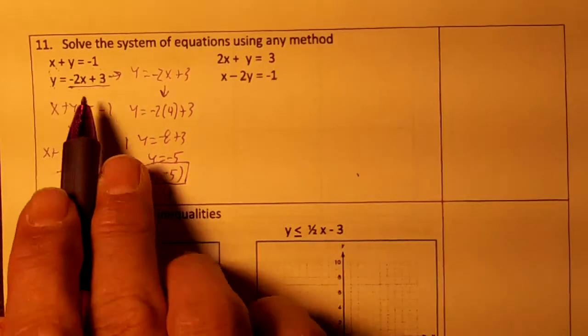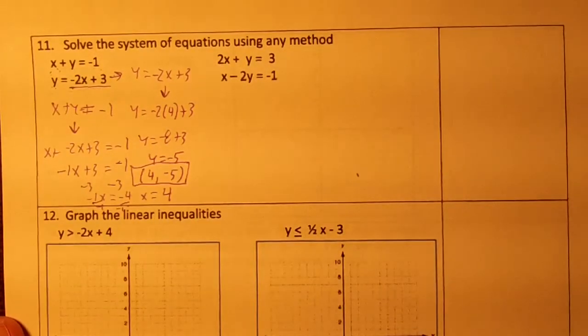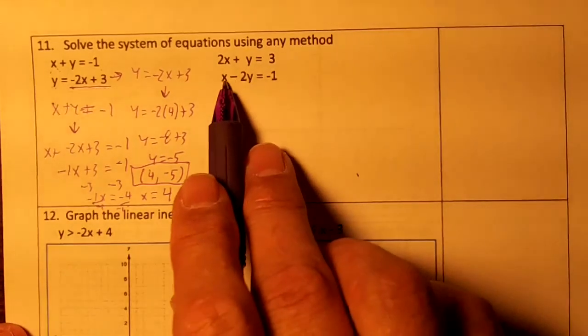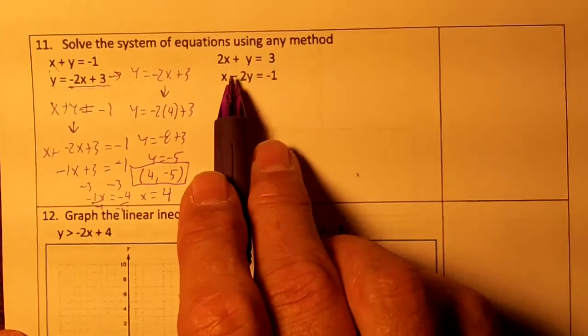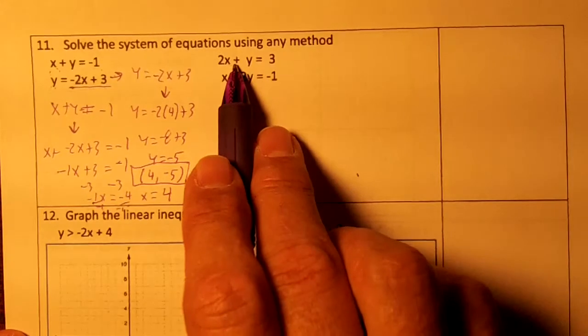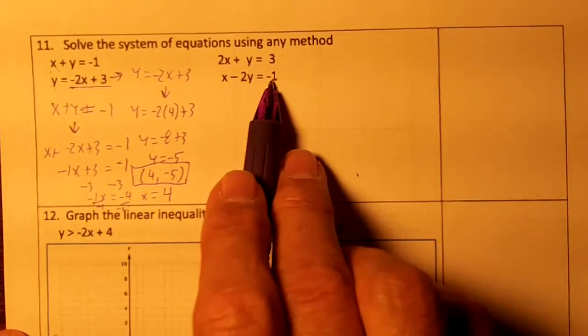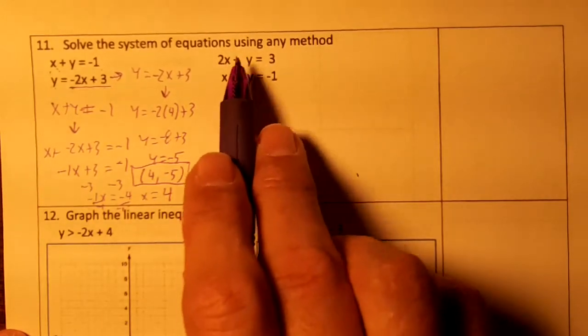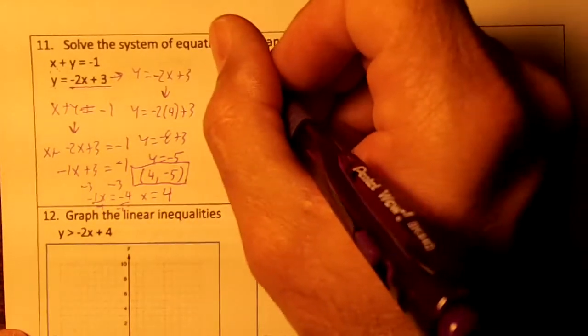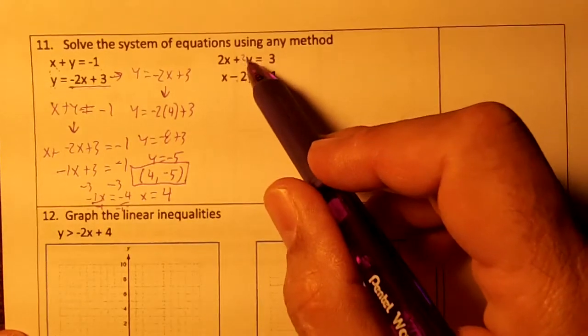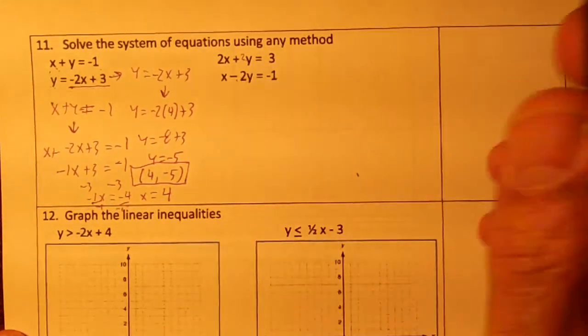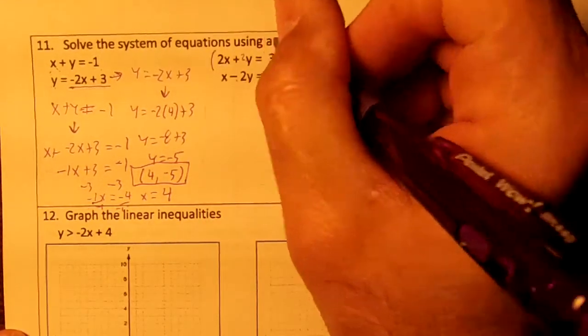On this problem, the opposite of negative 2 is positive 2. If I eliminate the x's, both of these are in standard form, so I'm going to eliminate. I can make the y's opposite. The opposite of minus 2 is plus 2, so if I make this y plus 2, the y's will eliminate. I'm going to multiply everything in the equation by 2.